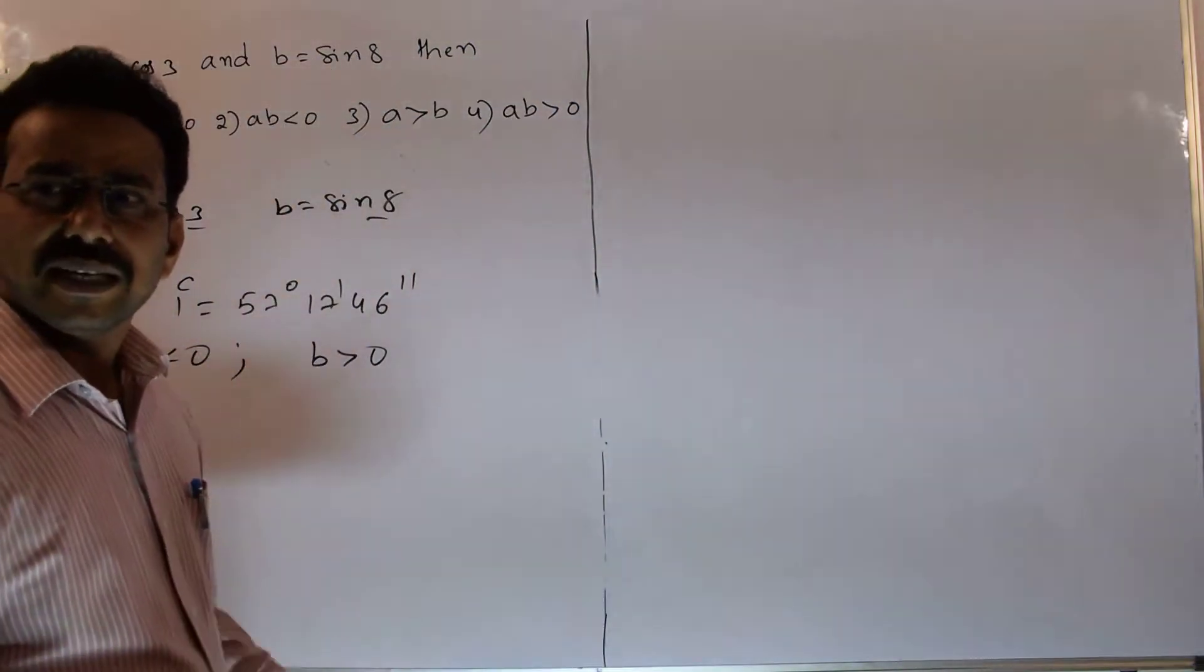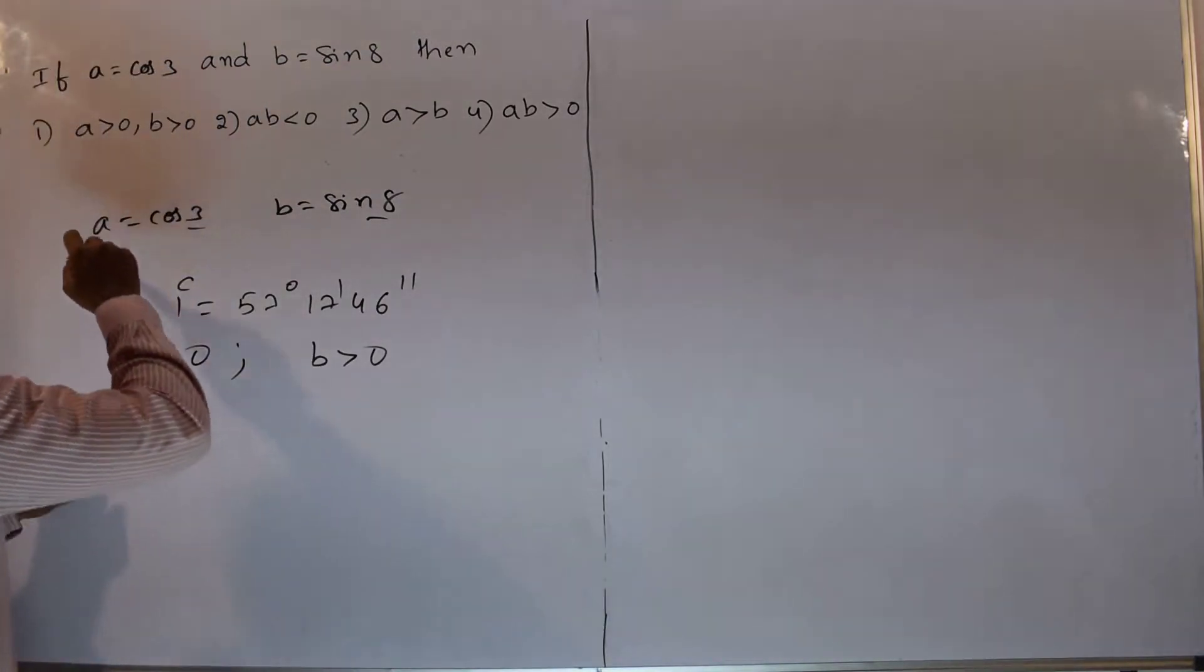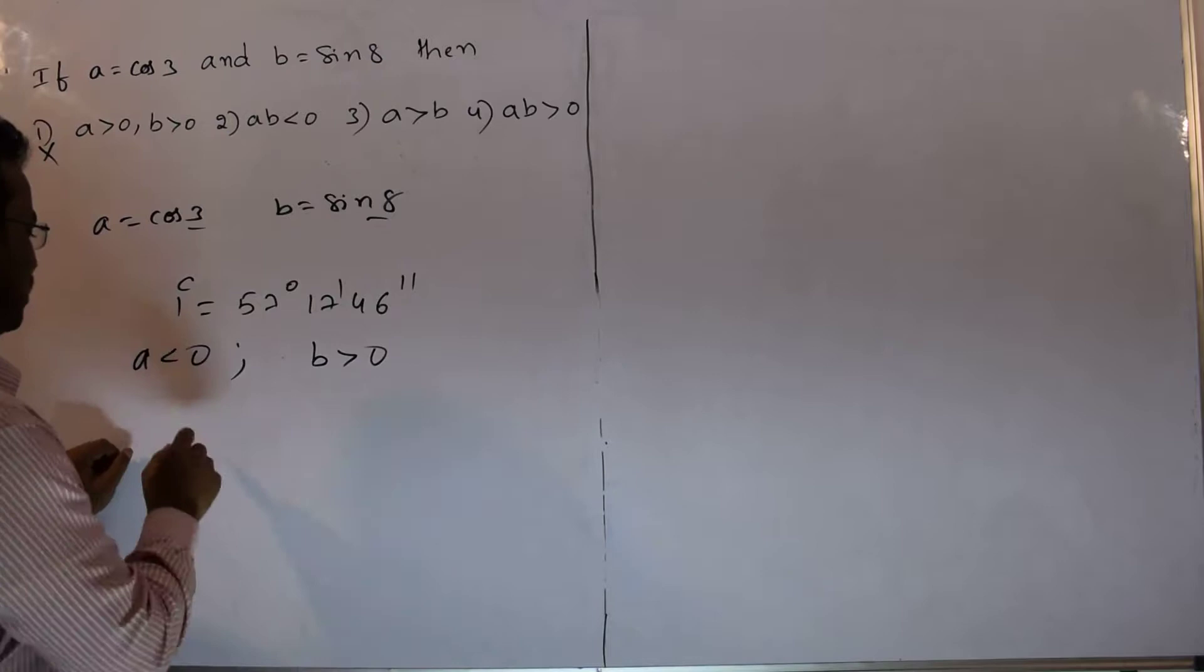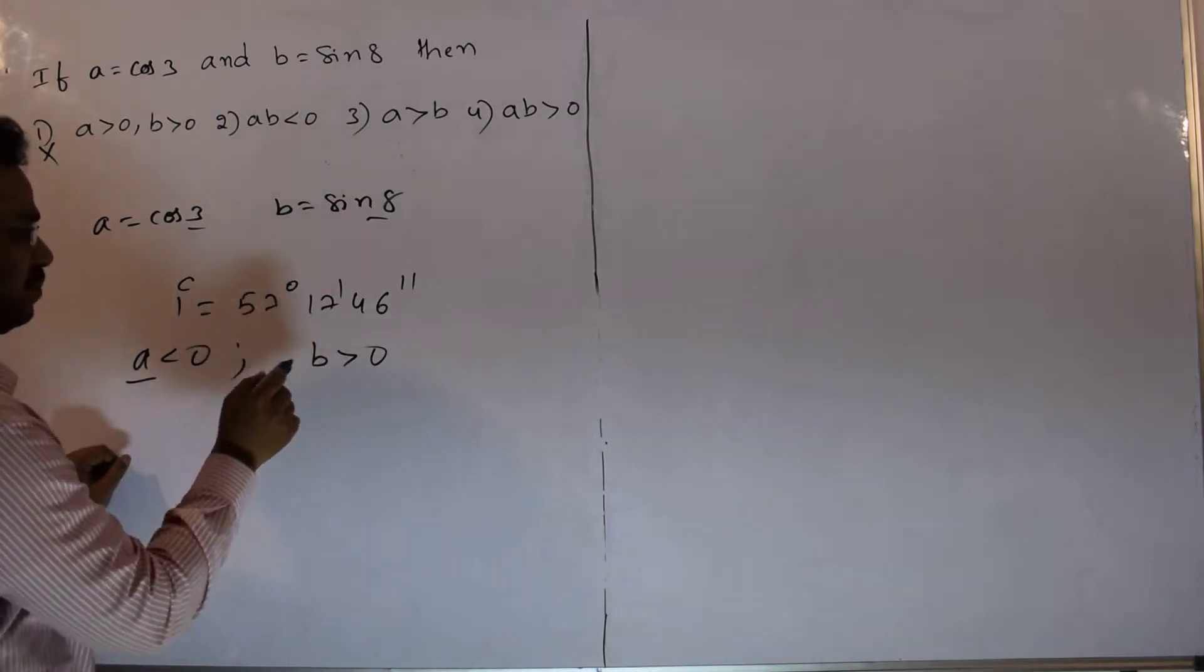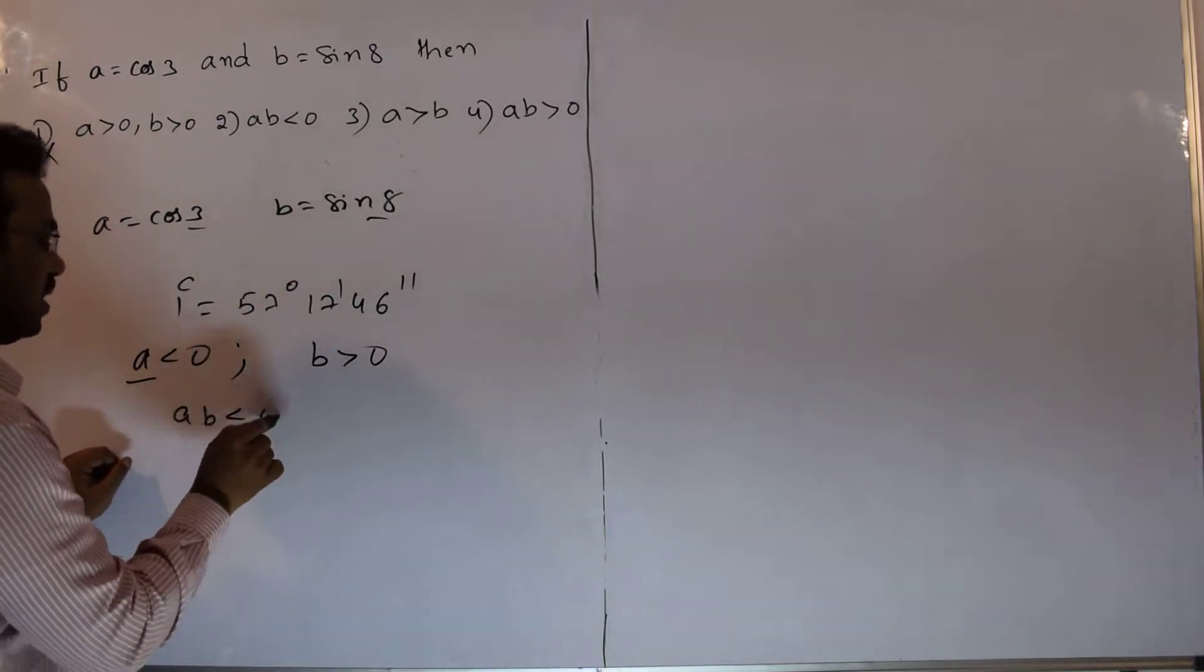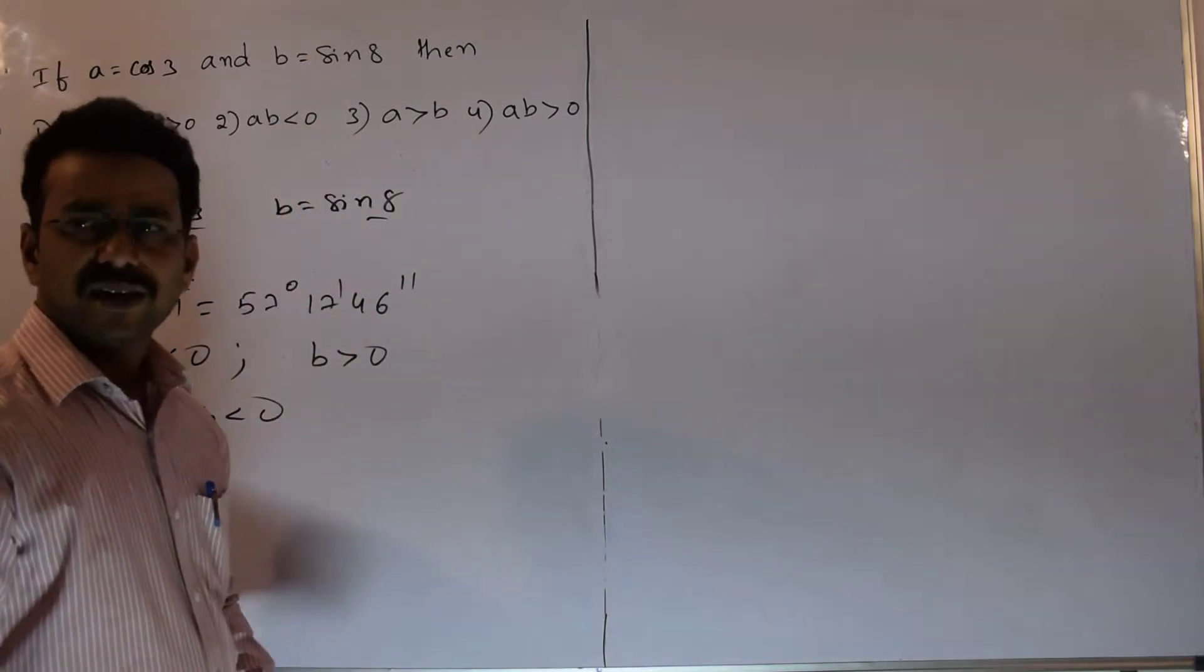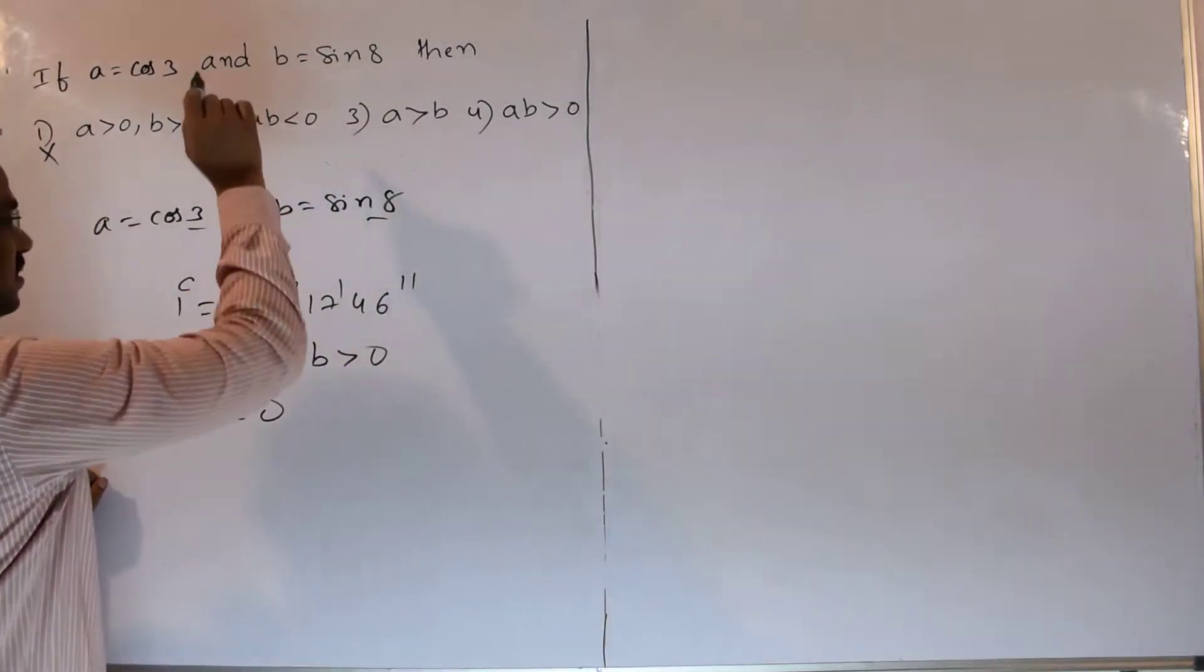Now let's compare with our available options. What is the first option here? A greater than 0, B greater than 0. This is incorrect. Second option: AB should be less than 0, plus into minus equals minus. Now rest of the options are incorrect. This is the correct answer.